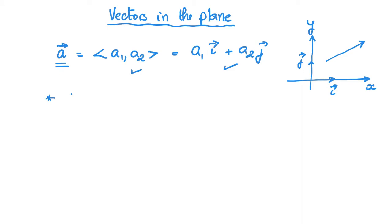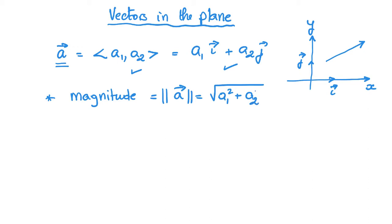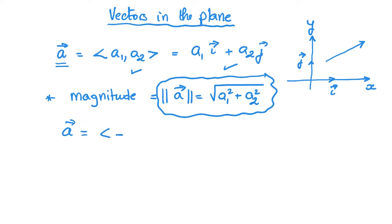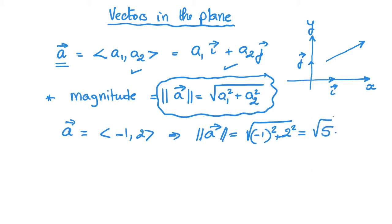A vector is a quantity that has both a magnitude and a direction. The magnitude of a vector is basically its size, written as |a|, and is given by the square root of a1 squared plus a2 squared. So if a is the vector (-1, 2), then its magnitude will be the square root of (-1) squared plus 2 squared.